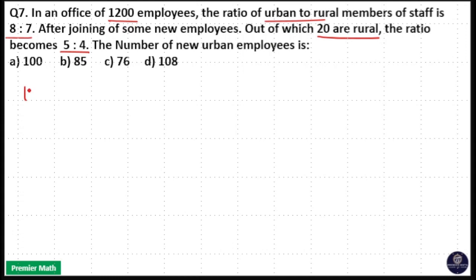There were 1200 people in the office, and out of which urban to rural ratio was 8 to 7. That means 7 units as rural and 8 units as urban in the 1200 people. After joining some people, the ratio becomes 5 to 4.